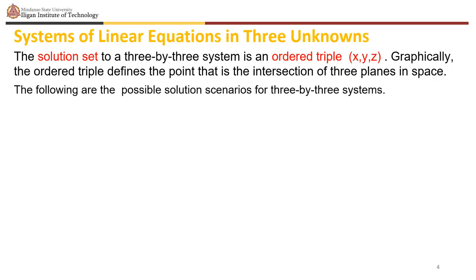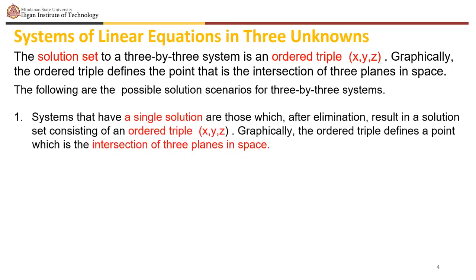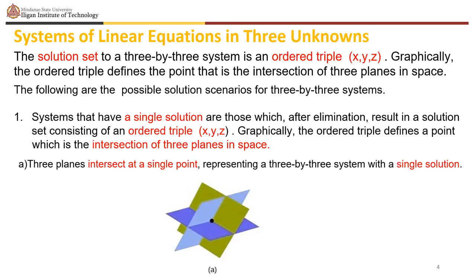The following are the possible solution scenarios for 3×3 systems. Systems that have a single solution are those which, after elimination, result in a solution set consisting of an ordered triple (x, y, z). Graphically, the ordered triple defines a point which is the intersection of three planes in space. Here is a sketch of three planes which intersect at a single point. The point of intersection is where the first plane, the violet plane, and the green plane all meet.